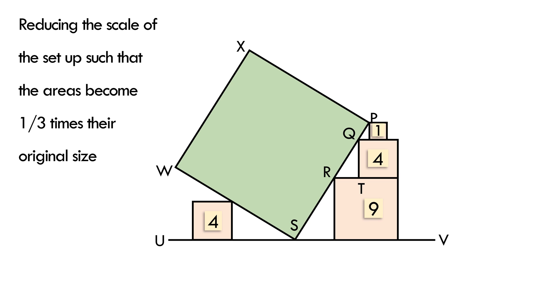Remember, it's not a necessary step but it will make our process nice and easy. So the areas now are 9 square units, 4 square units, 1 square unit and 4 square units as shown.